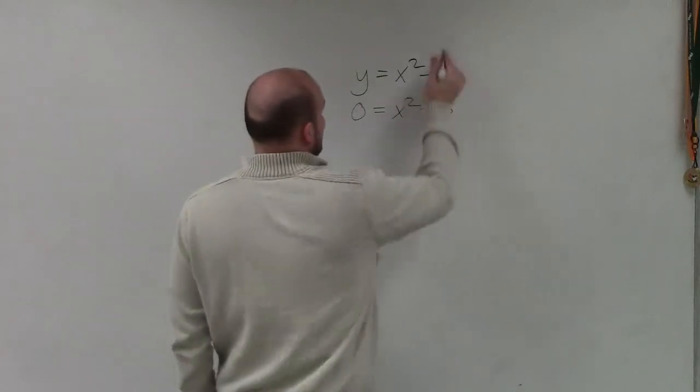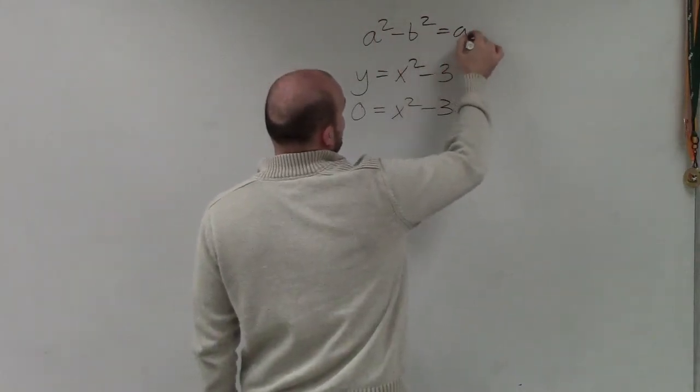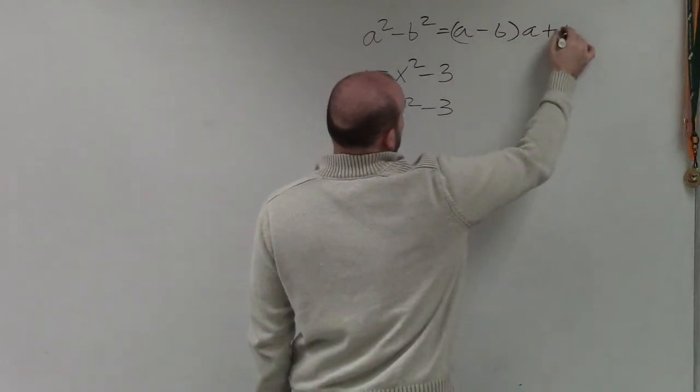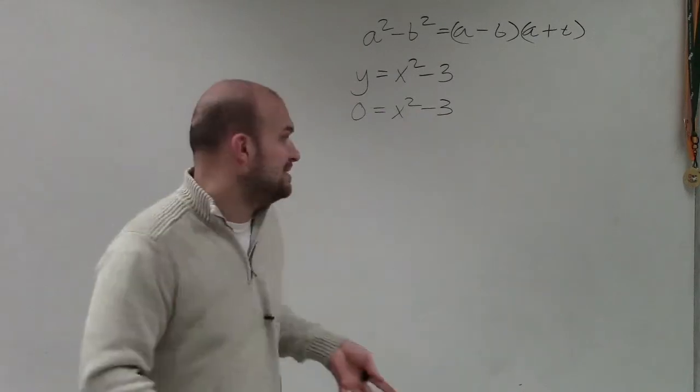So what I like to do is, if you remember, the difference of two squares factoring technique was a squared minus b squared equals a minus b times a plus b. So what we want to do is determine what are our a's and what are our b's.